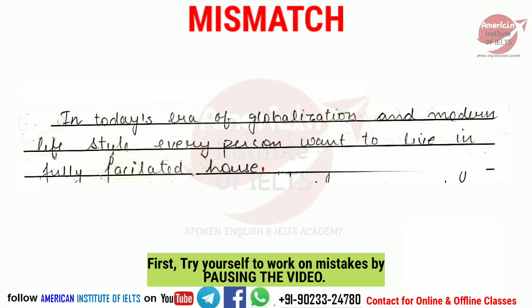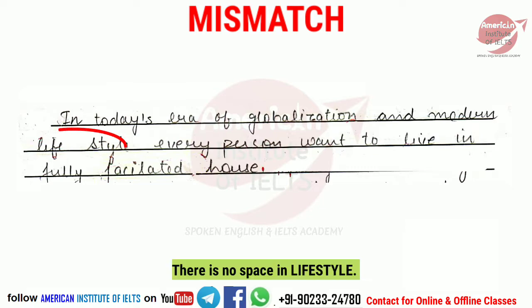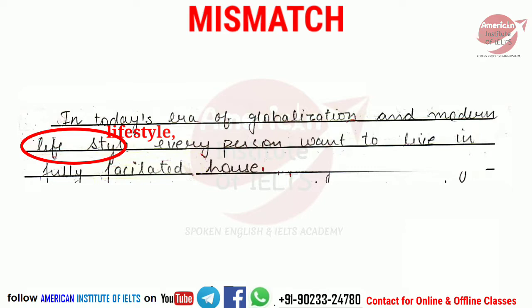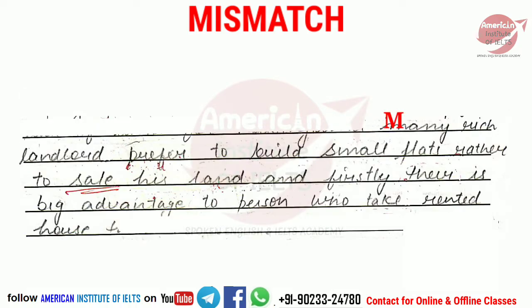First, try to find the mistakes yourself — you can pause the video. Let's work it out: 'In today's era of globalization and modern lifestyle' — we need to add a space and then a comma. 'Every person want to live in a fully facilitated house' — since 'every person' is singular, it should be 'every person wants'. We also need to fix the spelling of 'facilitated' and 'house'.